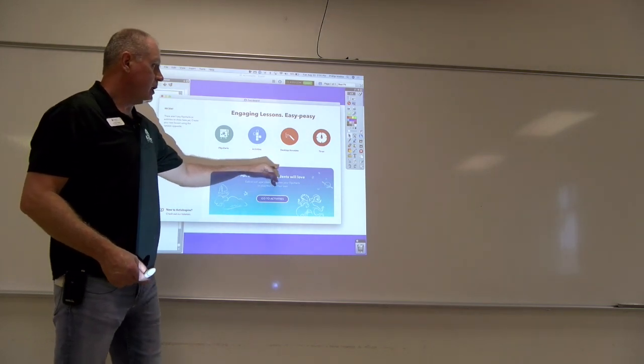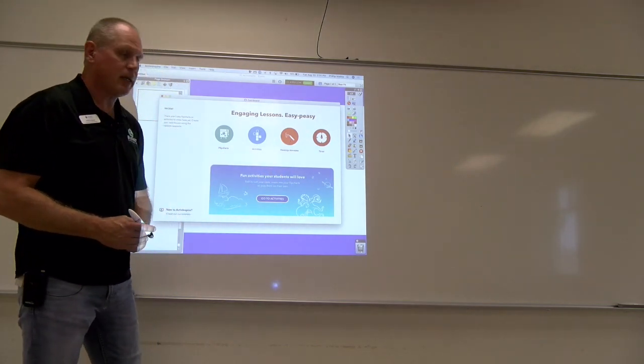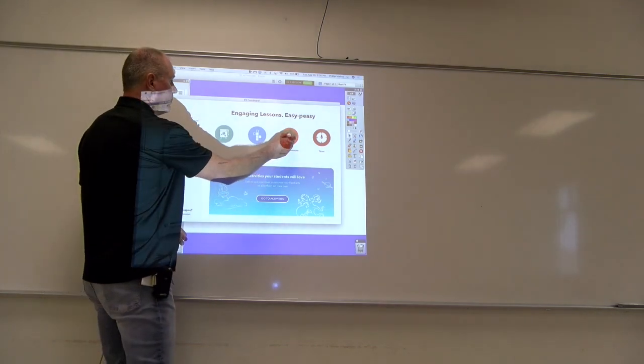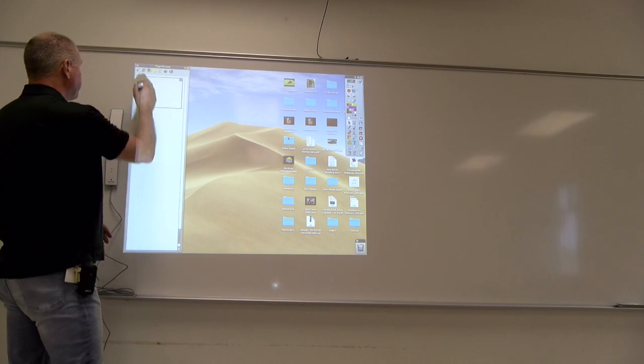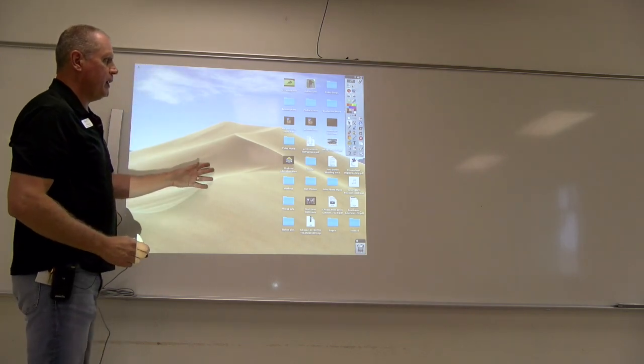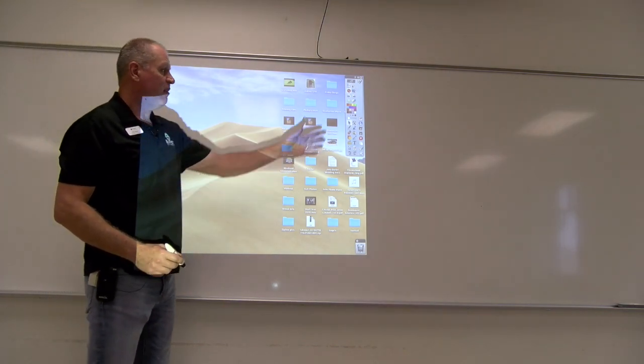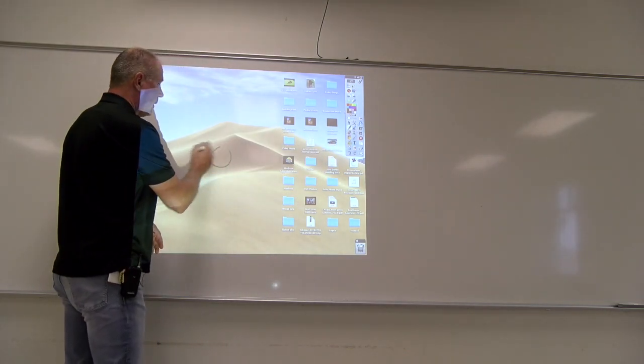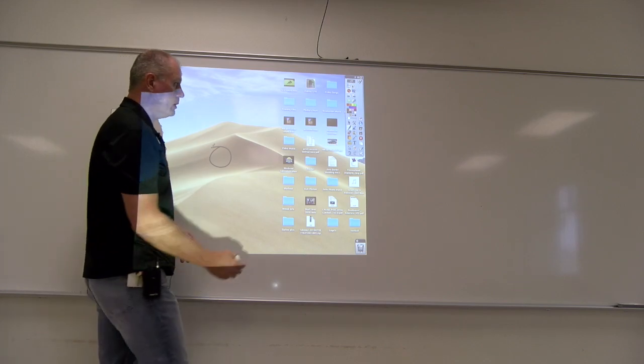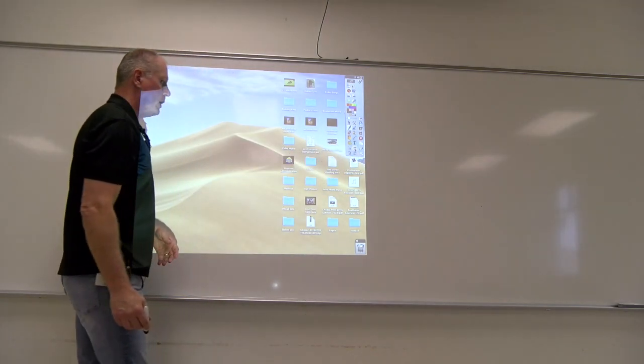There's Activities, Desktop Annotate. What you can do with that is if I simply click on Desktop Annotate, that brings me out to my desktop and close this window. Now that I'm on my desktop, I have my tools here. I can select my pen, and I can write on my desktop if I wanted to. I can erase that.